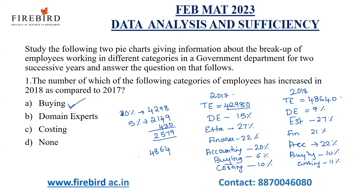In case of domain experts, it is 15% in 2017 and 9% in 2018. What is 15% of 42,980? It will be about 6,400. What is 9% of 48,600? That is less than 4,800. So there is definitely a decrease in domain experts — it is not the answer.